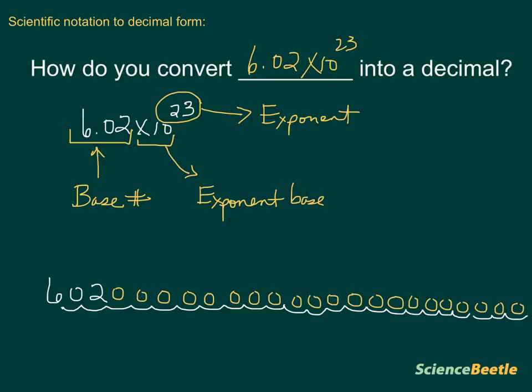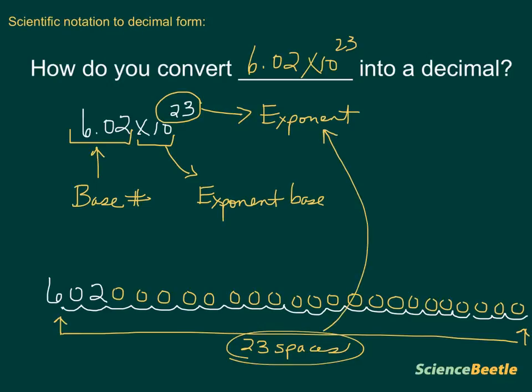Notice, while we do this, the space is going to be if I look from right here where the space is here to the very end, the distance between these here is going to be 23 spaces apart. And that 23 spaces is what we got when we looked at the exponent up here.